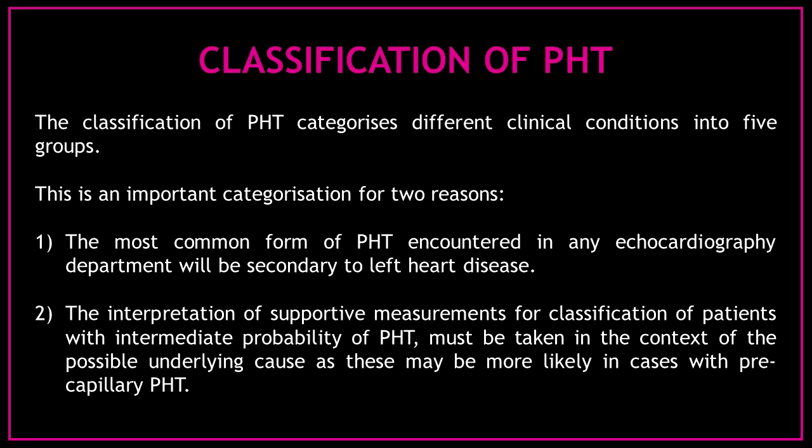The classification of pulmonary hypertension categorizes different clinical conditions into five groups. This categorization is important for two reasons. First, the most common form of pulmonary hypertension encountered in any echocardiography department will be secondary to left heart disease. Second, the interpretation of supportive measurements for classification of patients with intermediate probability of pulmonary hypertension must be taken in the context of the possible underlying cause, as this might be more likely in cases with precapillary pulmonary hypertension.